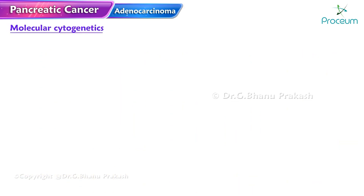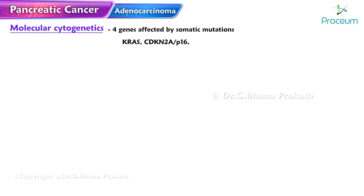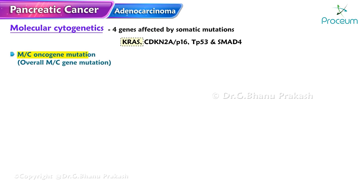In terms of molecular cytogenetics, four genes are most commonly affected by somatic mutations in pancreatic neoplasms: KRAS, CDKN2A (p16), TP53, and SMAD4. KRAS is the most common oncogene mutation in pancreatic cancers overall and represents the most common gene mutation overall.